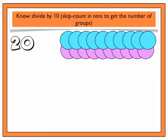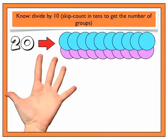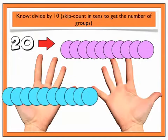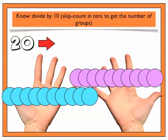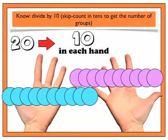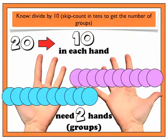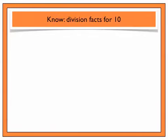Here are 20 counters this time. Can you guess how many friends will get counters? Let's see. 1 friend, 2 friends. Did you guess 2? When there are 10 in each hand, you need 2 hands or 2 groups. Now finally, let's take a look at the division facts for 10.